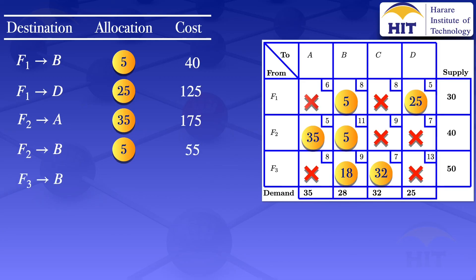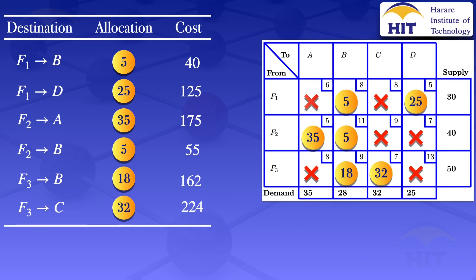From F3 to B: 18 units at a unit cost of 9 → cost = 18 × 9 = 162. From F3 to C: 32 units at a unit cost of 7 → cost = 32 × 7 = 224. Adding all costs together gives a total cost of 781. The initial basic feasible solution using the least cost method gives us a total cost of 781.